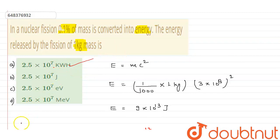So you may say the answer is 2.5 times 10 to the power 7 kilowatt hour. That is, my first one is my correct answer. I hope this is clear to you all, thank you very much.